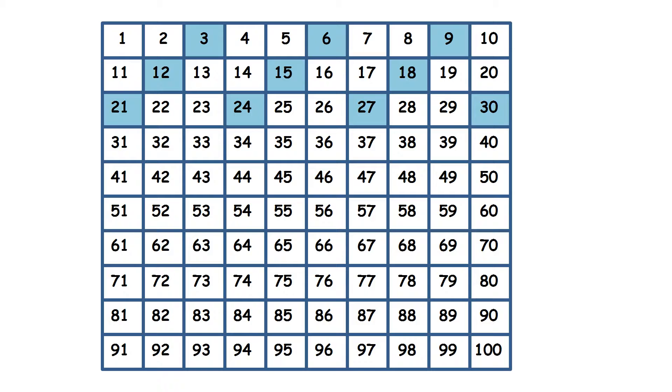And if we were to continue counting in steps of 3, so adding 3 each time, a 100 square would look like this. Now can you spot any patterns here?